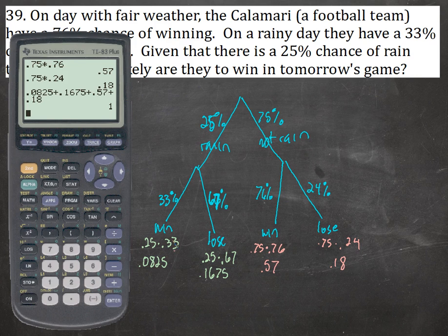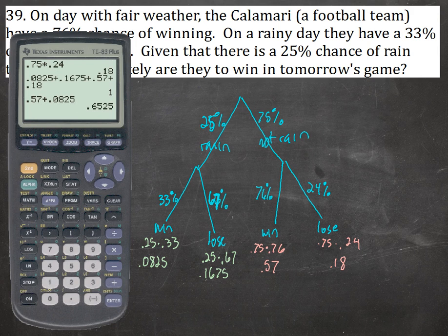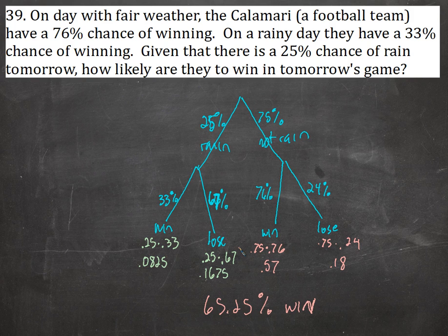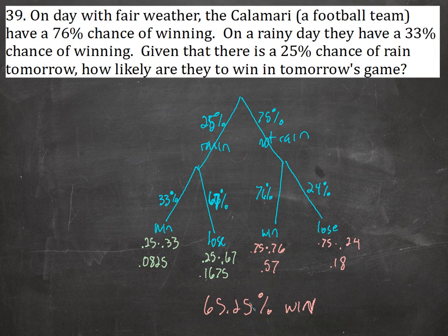How likely is it that they'll win? The win on a rainy day happens 8.25% of the time, and the win on a clear day happens 57% of the time. So it's 0.57 plus 0.0825 — they have a 65.25% chance of winning. That takes into account both the rain and no-rain scenarios. They're pretty likely to win because it's likely not to rain and they're likely to win when it doesn't rain. If we switched it to make rain more likely, the scales would tip toward them losing, since they're not very good in the rain.